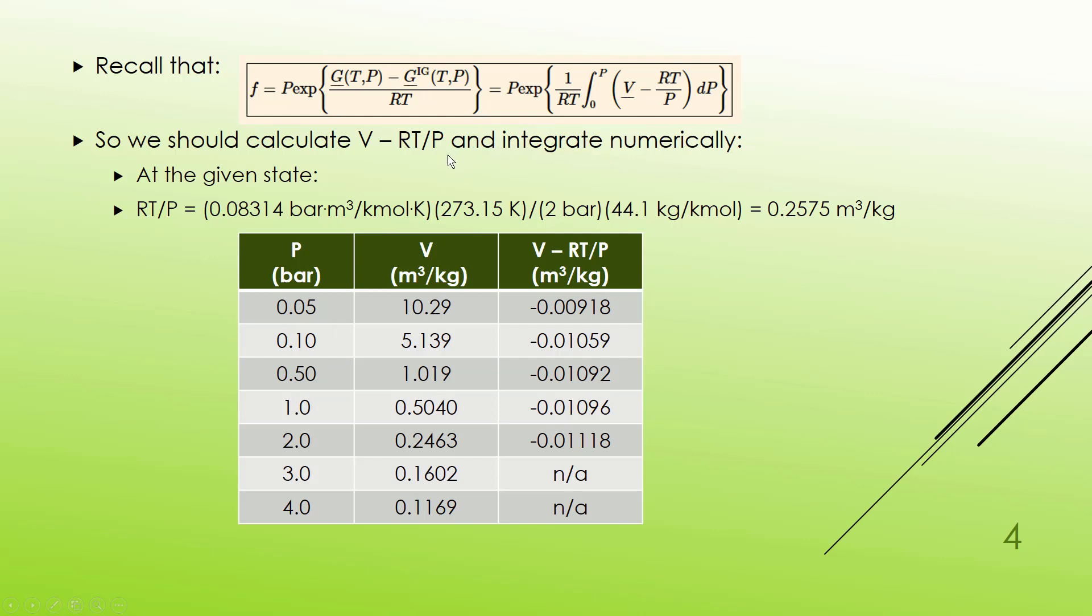So RT over P. T is a fixed value of 273.15, but P is going to change. If we do just a sample calculation here, the R value I used is 0.08314 bar cubic meter per kilomole K. And the temperature is going to be fixed at 273.15 Kelvin. I need to get it into cubic meters per kilogram to match my table, and so I need the molecular weight, which is 44.9 kilograms per kilomole. And so at the pressure of 2 bar, RT over P is 0.2575.